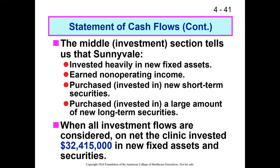In the investment section, they bought a lot of new equipment, earned some positive non-operating income — which isn't always positive; you can have a non-operating loss from something like a lawsuit or investment losses — purchased new short-term investments, and converted a large amount of cash into long-term securities. In total, they invested $32.4 million in fixed assets, so cash went down.